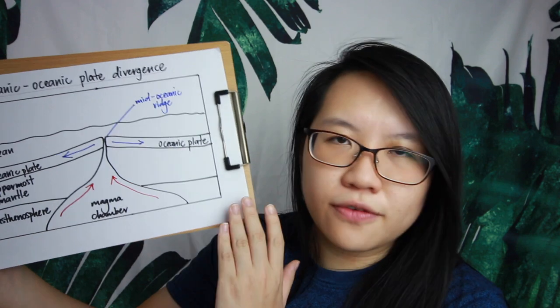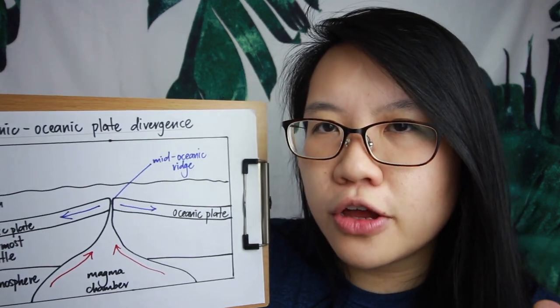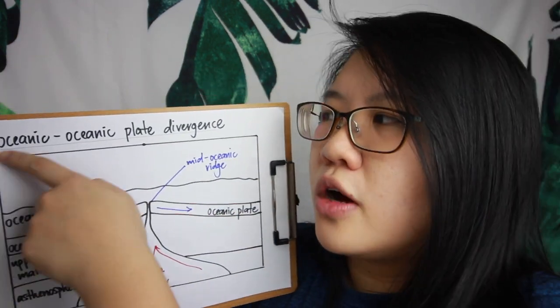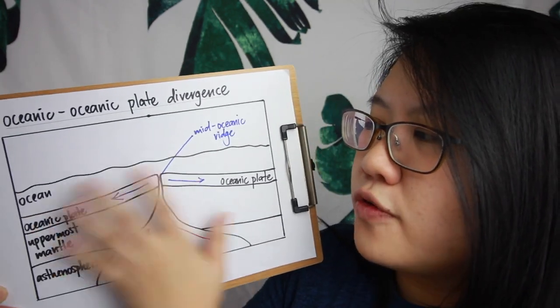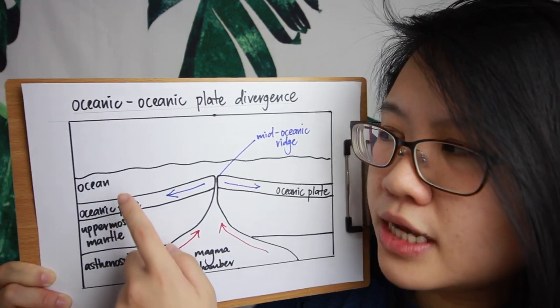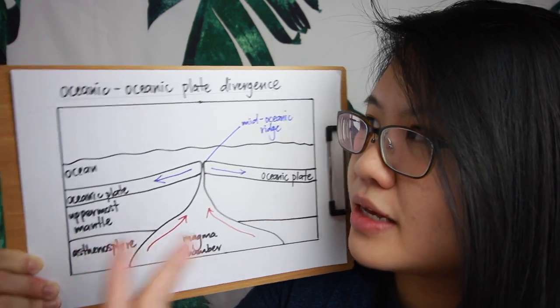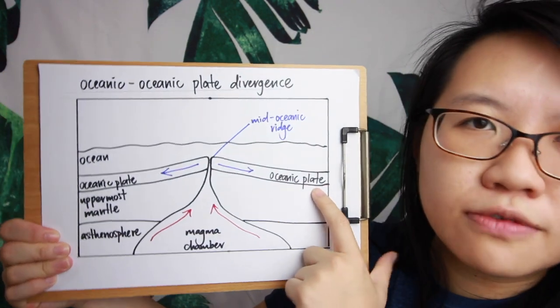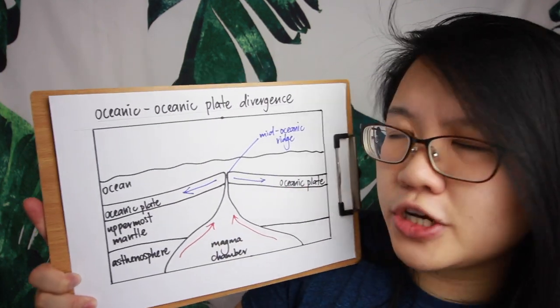Let me show you the entire process of drawing a well-labelled diagram. If you're given a question asking for a well-annotated diagram, make sure you don't write explanation in a full script — instead, write all explanation within the diagram as annotations. Practice before the exam so you don't spend too much time drawing. For OO divergence, first draw the box, write the title, then draw the overview layout and label every single layer — ocean, oceanic plate, uppermost mantle, and asthenosphere.